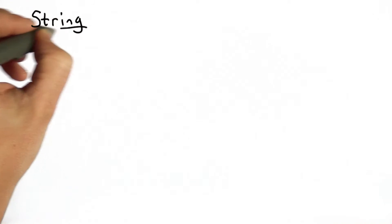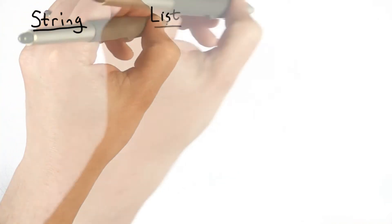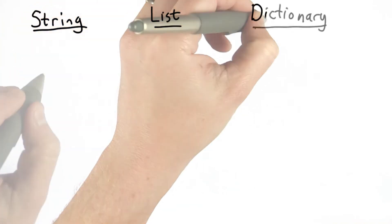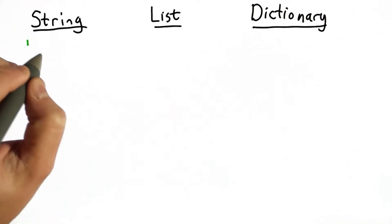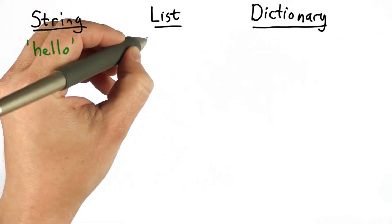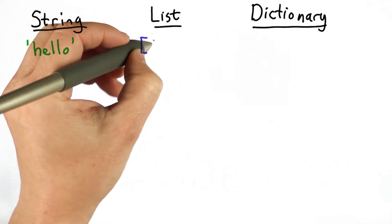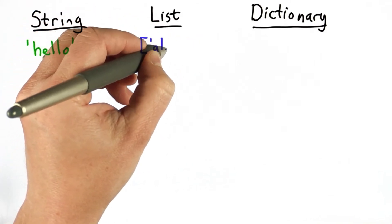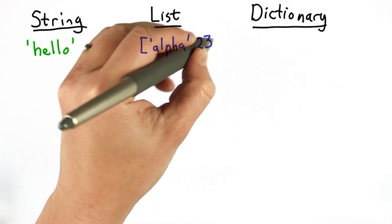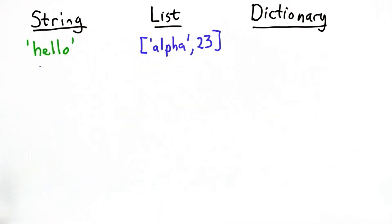So far, we've seen two complex types in Python. We've seen the string type, and we've seen the list type. Now we're going to introduce the dictionary type. There are many things that are common between these three, and other things that are different. To create a string, we could have a sequence of characters inside quotes. To create a list, we use the square bracket, and we could have a sequence of elements inside the square bracket. The elements could be any type, unlike a string where they had to be characters.